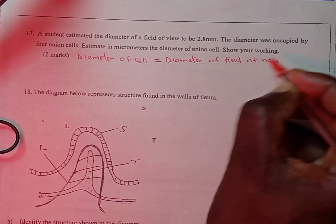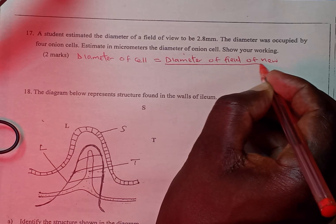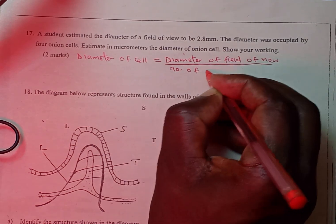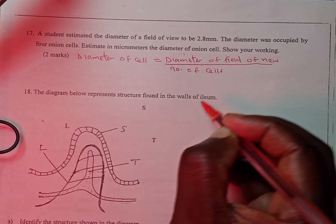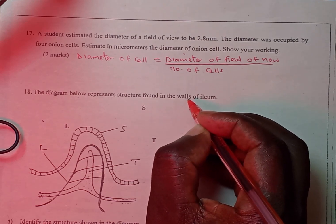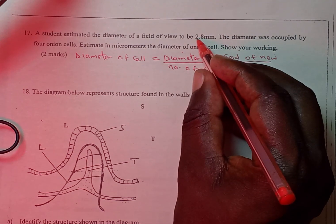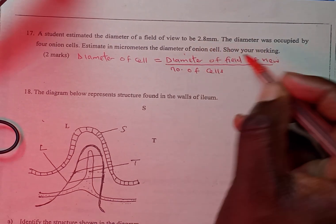You divide by the number of cells, and we know the diameter of field of view is 2.8 millimeters.